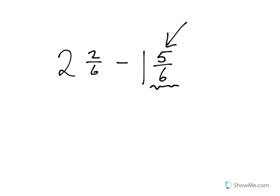But what do we do when we've got something like this? 2 2/6 minus 1 5/6. I cannot do 2 minus 1 here because I have a big fraction. I can't do 2/6 minus 5/6 because I'd get a negative fraction. So the easiest way is to convert this to a top-heavy fraction.